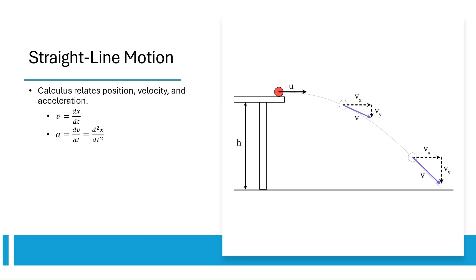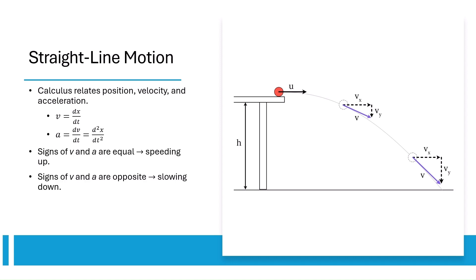In motion problems, we track position, velocity, and acceleration. Velocity is the derivative of position, and acceleration is the derivative of velocity or the second derivative of position. When the signs of velocity and acceleration are the same, the object is speeding up, and when they're opposite, a particle is slowing down. Note that when velocity switches signs, the particle changes direction.